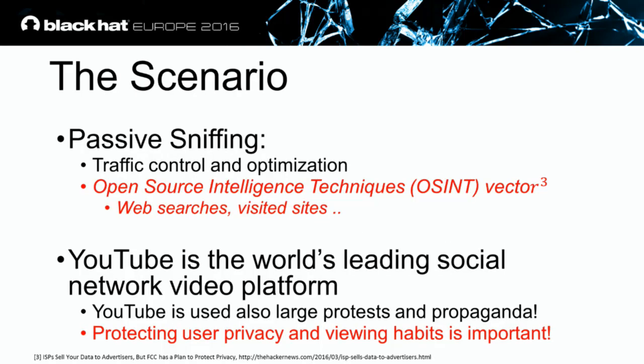Our scenario is passive sniffing. Passive sniffing is used by ISPs in order to understand which application you are using, how much data you are consuming, and what is your quality of experience from the different services you are using. However, they have also created an open-source intelligence vector from your traffic — they use your search history, your visited sites, and sell it to third parties.